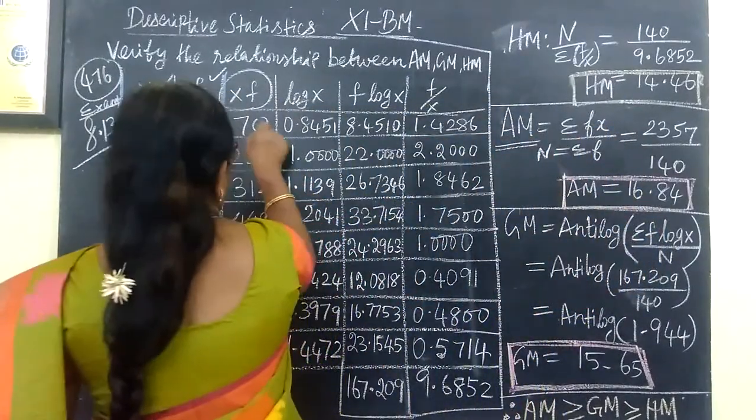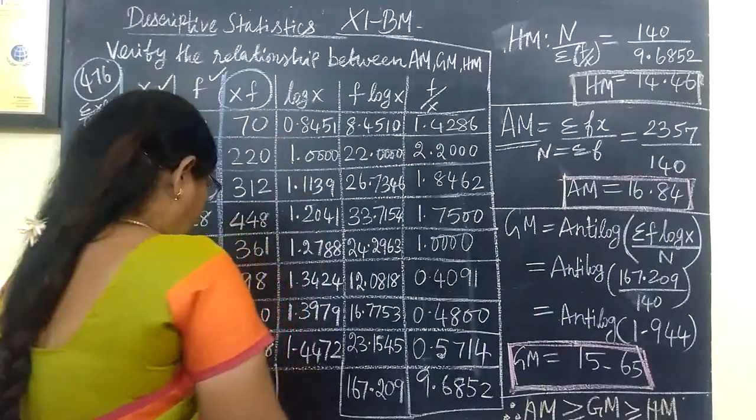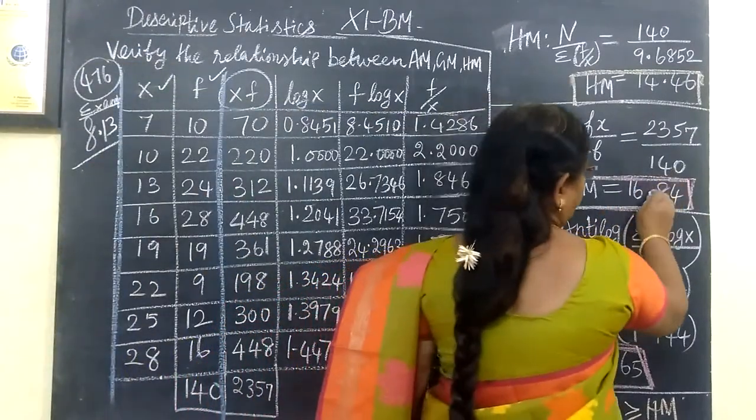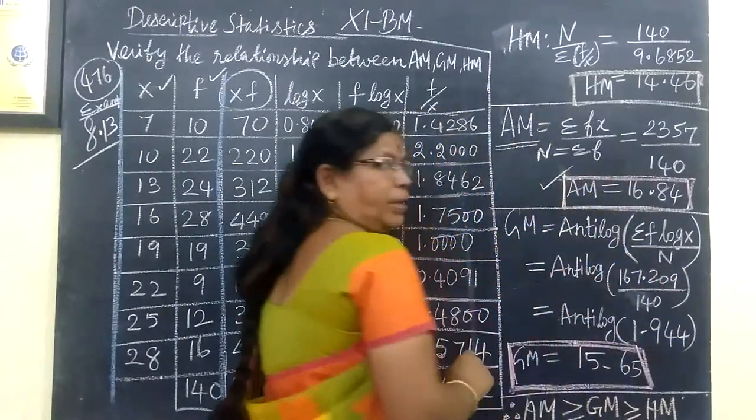Now add all this and add the frequency. Dividing by 140 gives us the arithmetic mean.